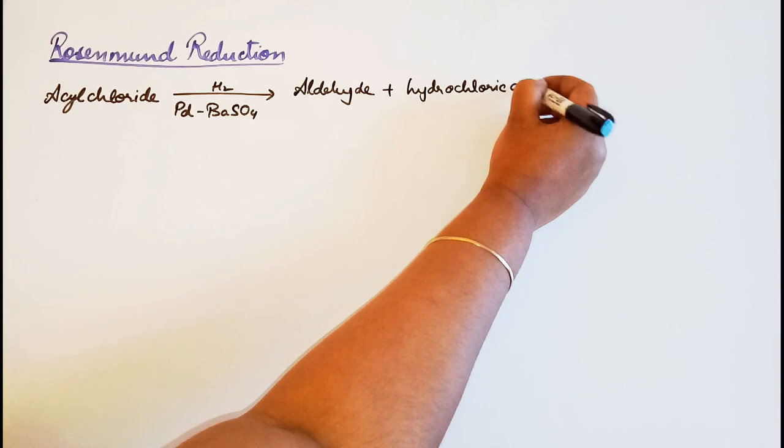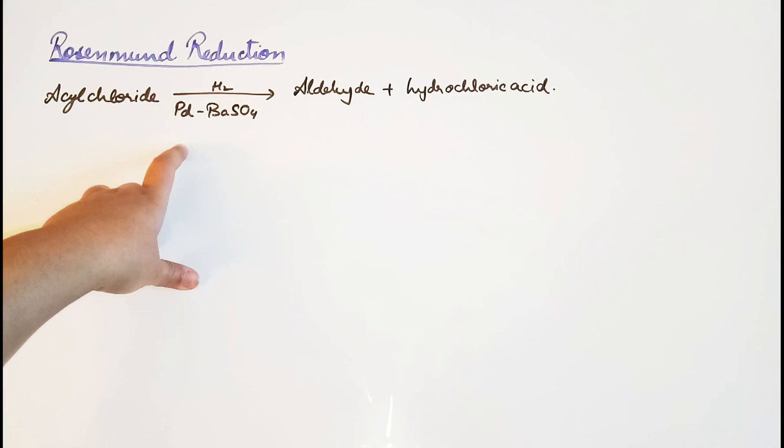So here acyl chloride is undergoing reduction in the presence of palladium and barium sulfate as the catalyst to form aldehyde as well as hydrochloric acid.